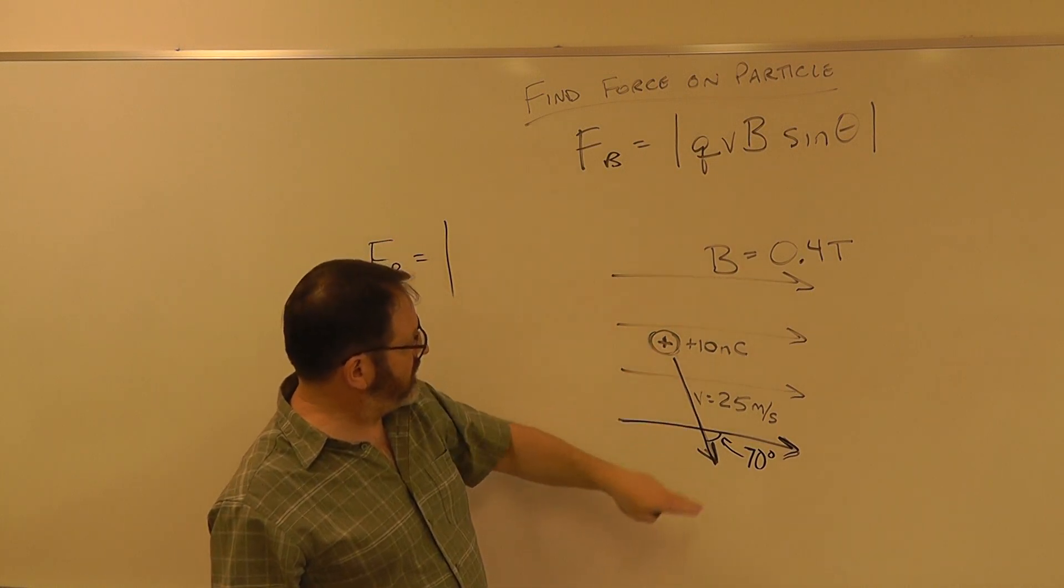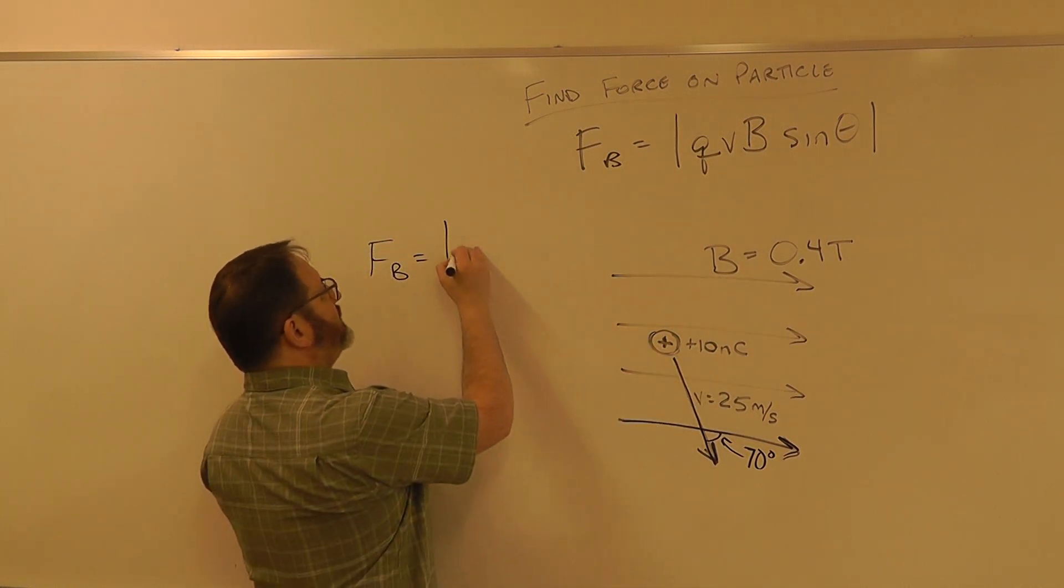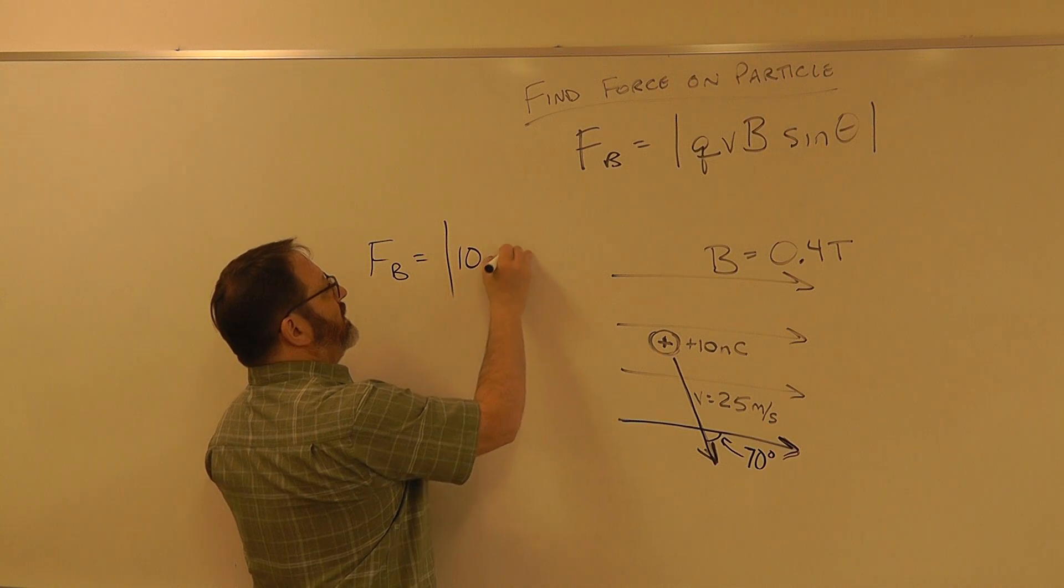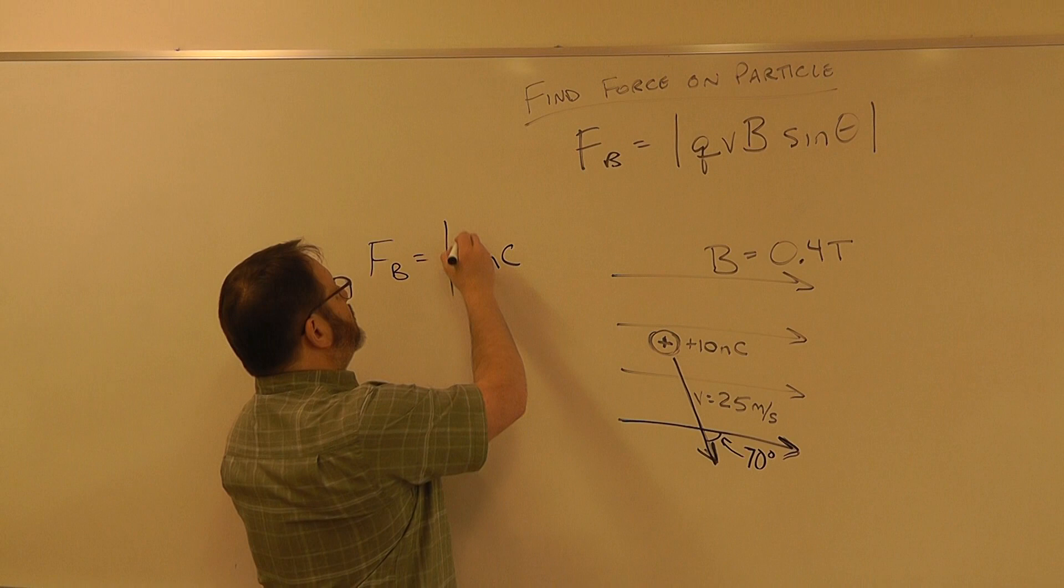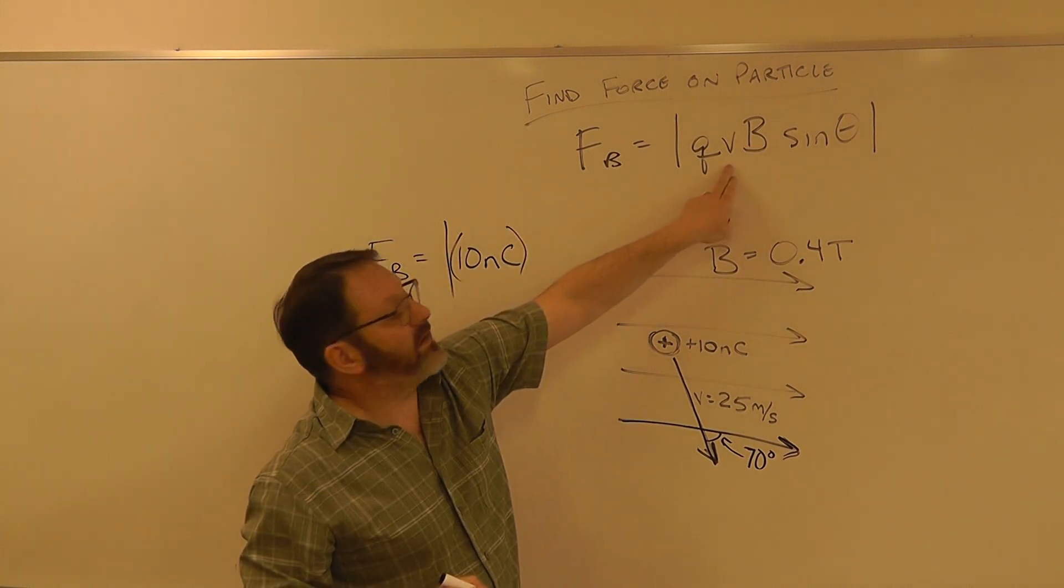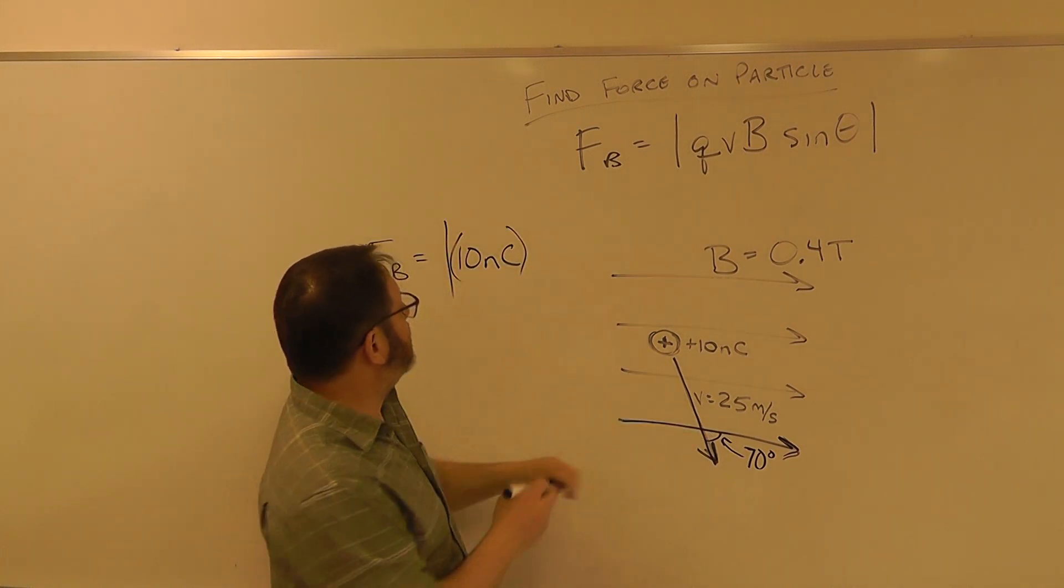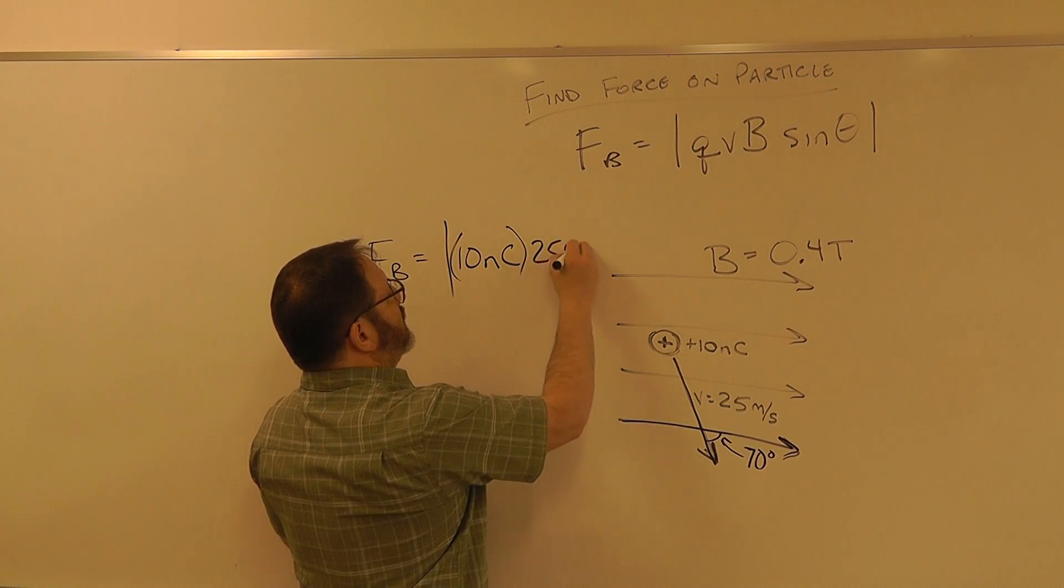q, which in this case is plus 10 nanocoulombs. It's all in the magnitude here, so I'm going to take the plus away for right now. So 10 nanocoulombs times v, which in this case is 25 meters per second.